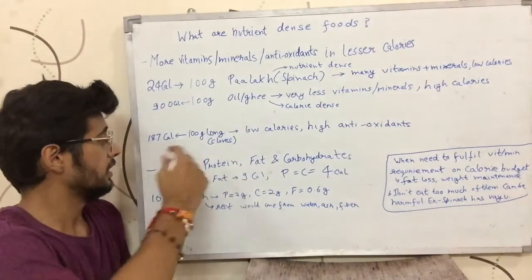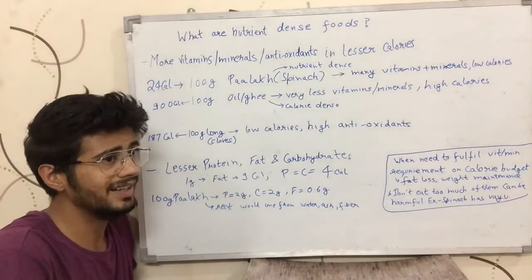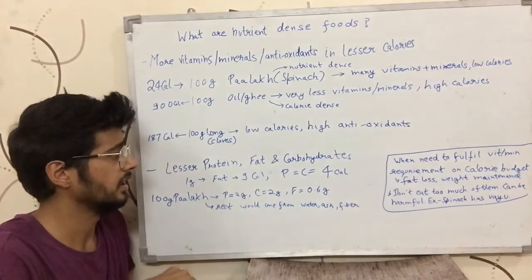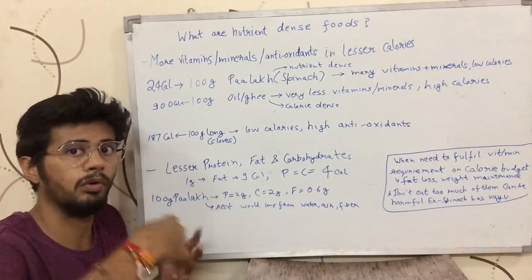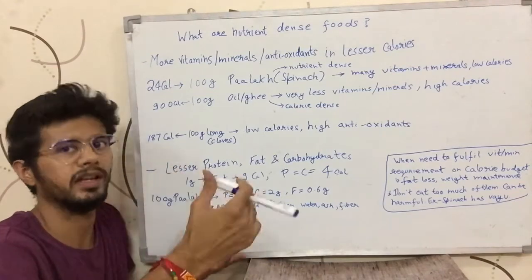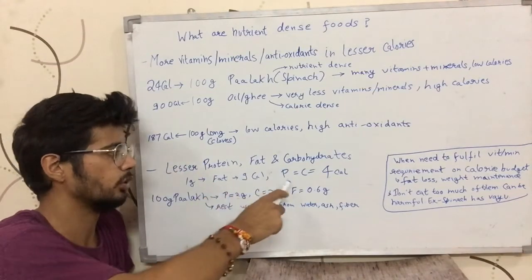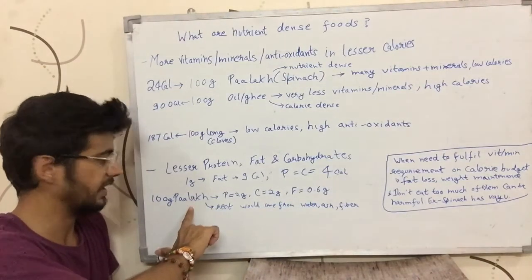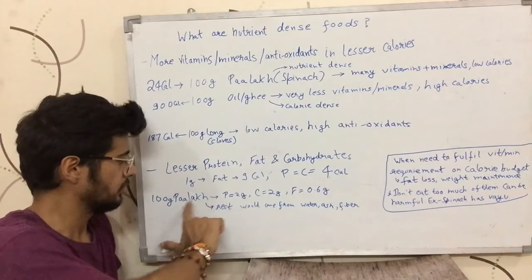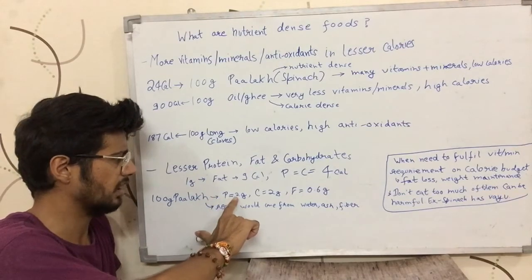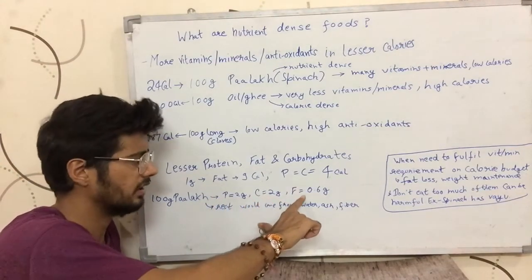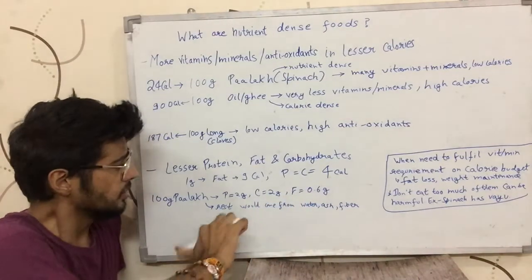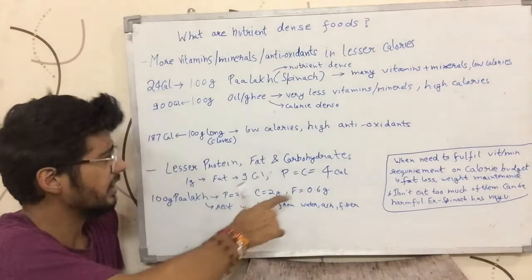Nutrient dense foods are more likely to have lesser weight from protein, fat, or carbohydrates. If they had more protein, fat, or carbohydrates they would have more calories, because fat has 9 calories per gram and protein and carbohydrates have 4 calories per gram. For example, 100 grams of spinach has around 2 grams of protein, around 2 grams of carbohydrate, and about 0.64 grams of fat, giving it around 24 calories.